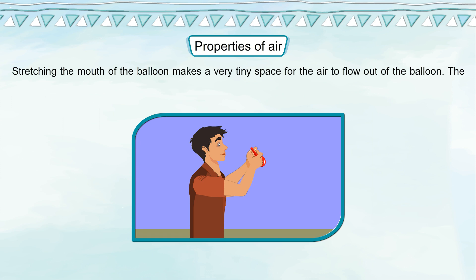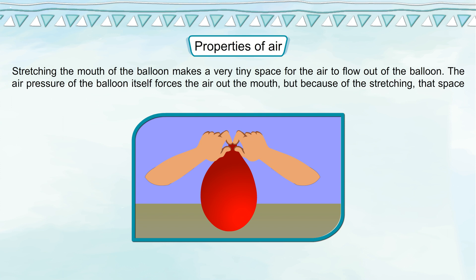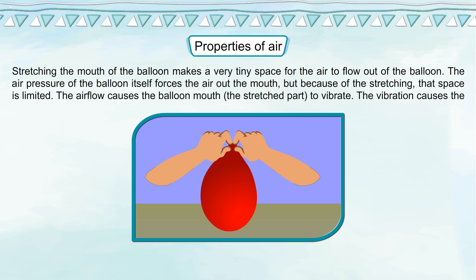Properties of air: stretching the mouth of a balloon makes a very tiny space for the air to flow out. The air pressure of the balloon forces the air out the mouth, but because of the stretching, that space is limited. The airflow causes the stretched part of the balloon mouth to vibrate, and the vibration causes the noise.